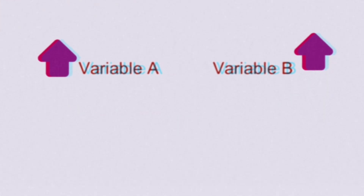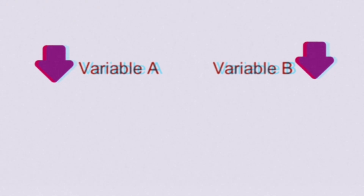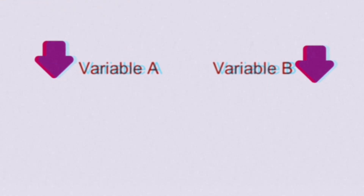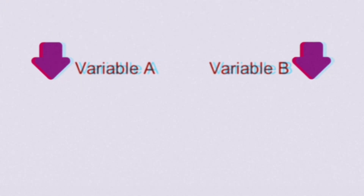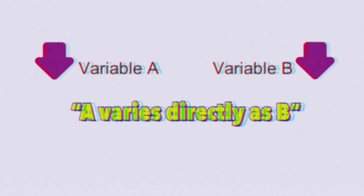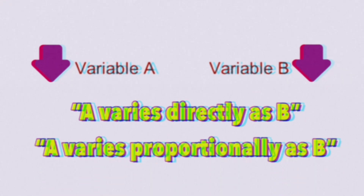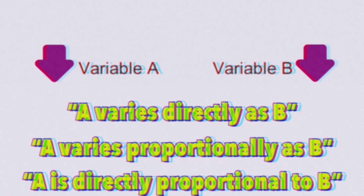On the other hand, if variable A decreases, then variable B would also decrease. Please notice the direction of the arrow — both of them are going down. For a direct variation, both variables have to increase or both variables have to decrease. Whenever we see this type of relationship, we can say that A varies directly as B, or A varies proportionally as B, or A is directly proportional to B.